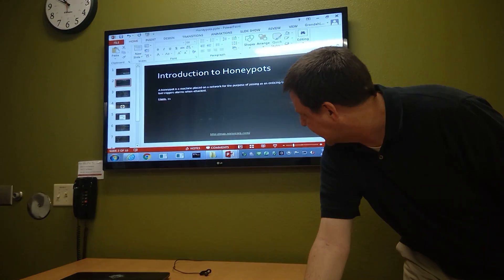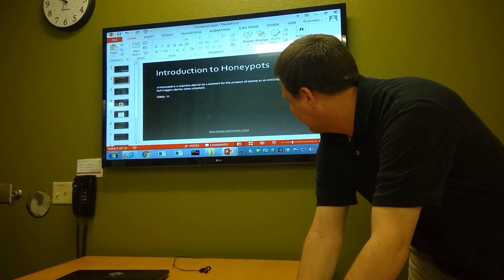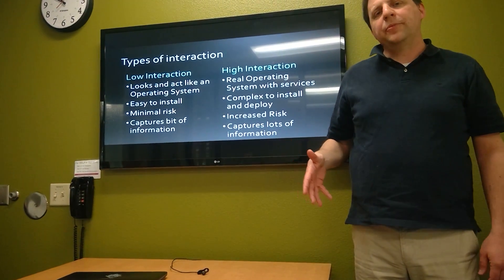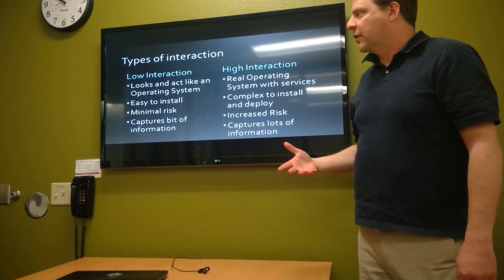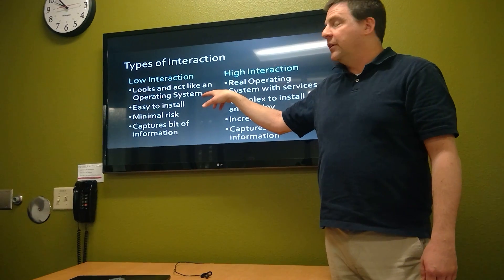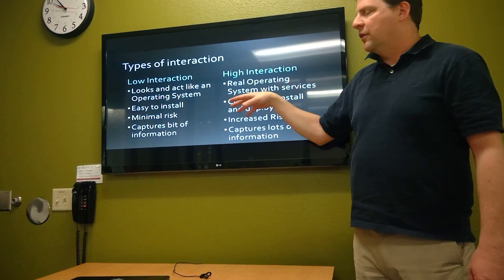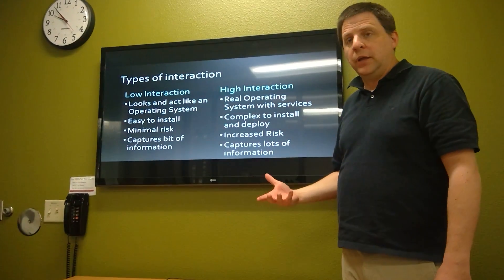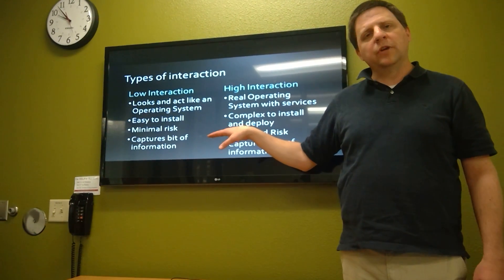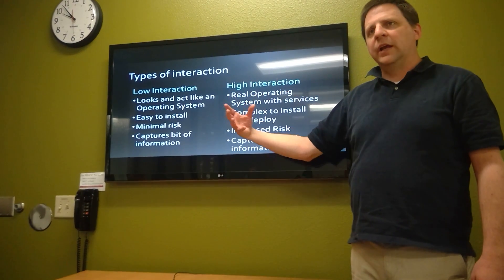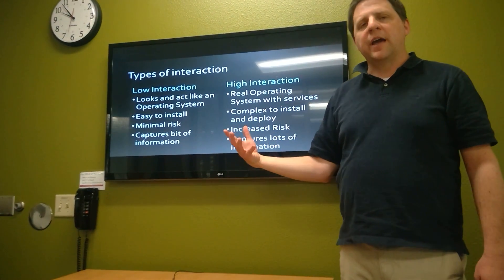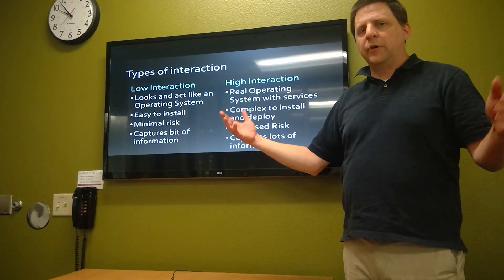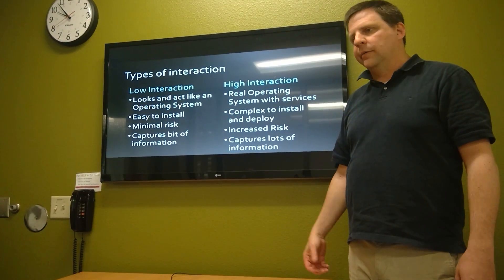Into the world of honeypots we go. There are basically two types of honeypots: the low interaction and the high interaction. The low interaction basically acts like an operating system. It is very easy to install — in fact, a lot of open source places give them away for free. There is very minimal risk involved. It is basically just sitting out there doing nothing, waiting for something to happen to it, and it just captures basic information. Basically it says, oh, somebody came over to your honeypot, and you might want to take a look at it.